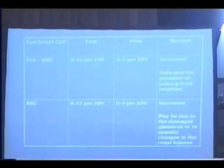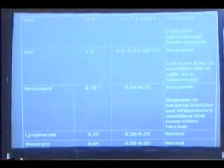CBC: Increased levels of RBC indicate infection and tissue necrosis. Decreased levels of RBC can occur from excessive loss of cells, as in hemorrhage. Increased levels of glutathione are due to bacterial infection and inflammatory conditions that cause tissue necrosis. Decreased levels of hemoglobin and hematocrit indicate severe or prolonged hemorrhage and severe anemia.